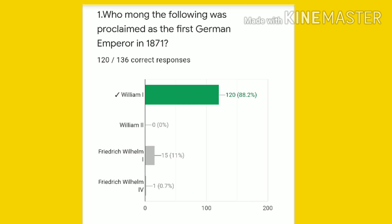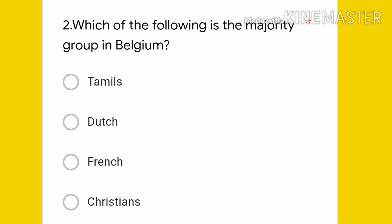15 students have given a wrong answer, so it is a very important question and 120 students have done fine. Second question: which of the following is the majority group in Belgium — Tamils, Dutch, French, or Christians?